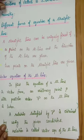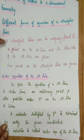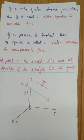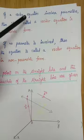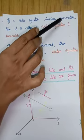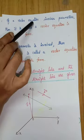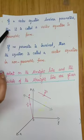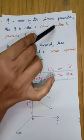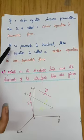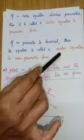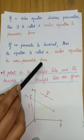In the vector equation you have two types: parametric form and non-parametric form. If a vector equation involves a parameter — that is, T or S — it is called a vector equation in parametric form. If no parameter is involved, the equation is called a vector equation in non-parametric form.